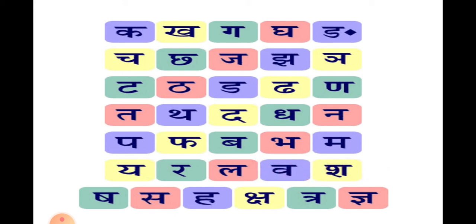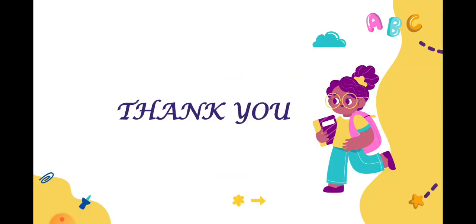And the last letters: क्ष, त्र, ज्ञ। These are all the letters. I hope that was a quick recap of all the letters. Keep pausing the video and repeat with me — each letter, repeat with me — then only you will get the practice. Dhanyavaad children. Thank you so much.